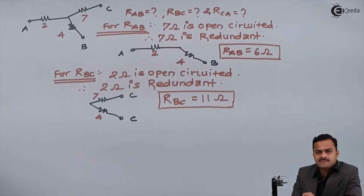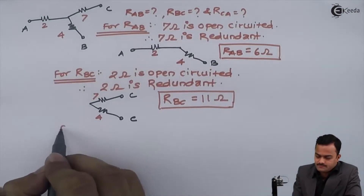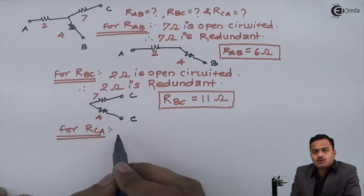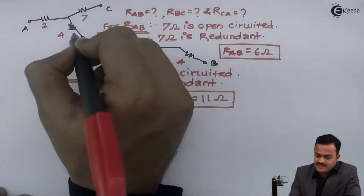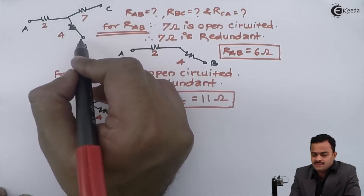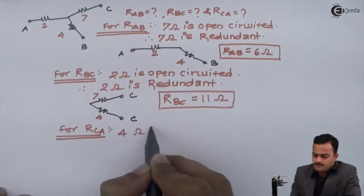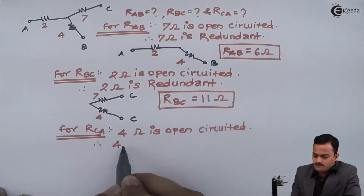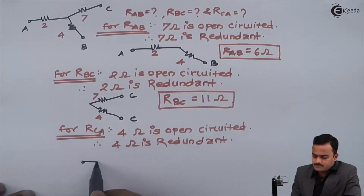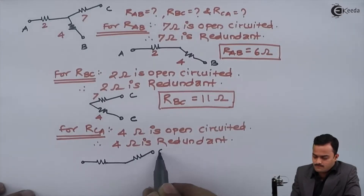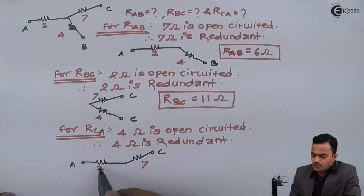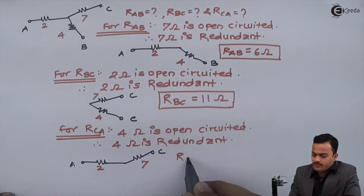The same concept applies for the calculation of R_ca. For R_ca, point B is redundant and 4 ohm is open circuited and hence redundant. The circuit becomes a simple series connection of 2 ohm and 7 ohm, giving R_ca equal to 9 ohm.